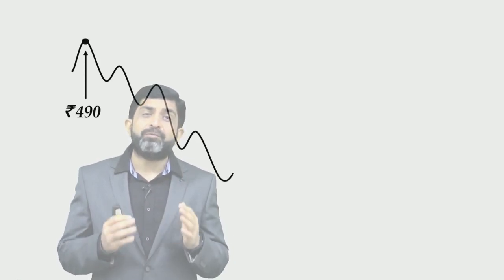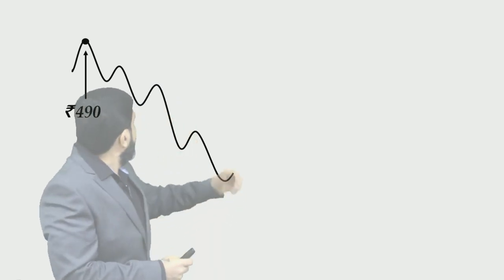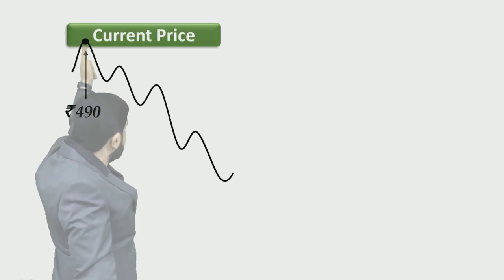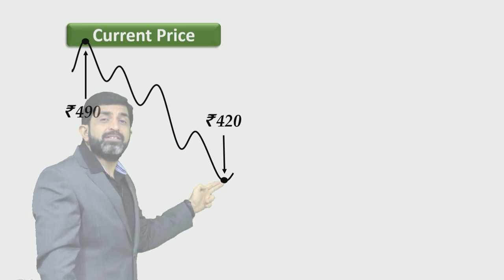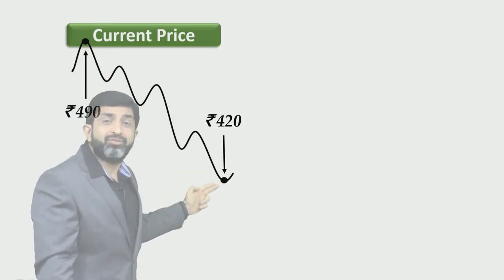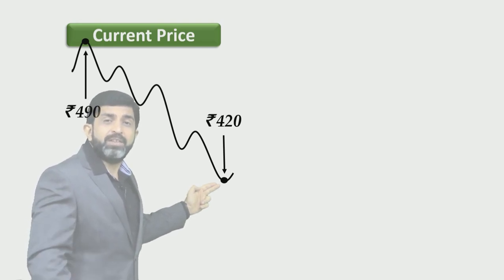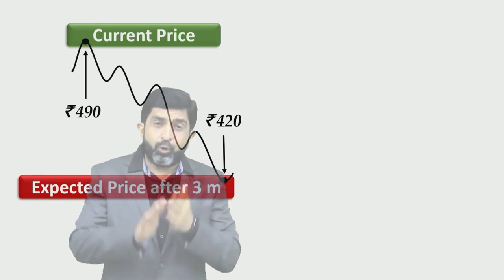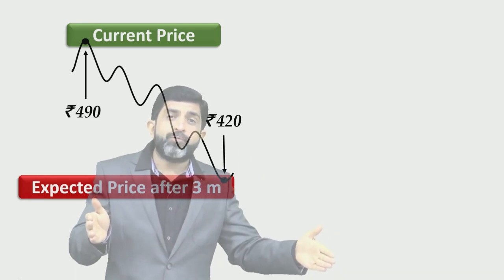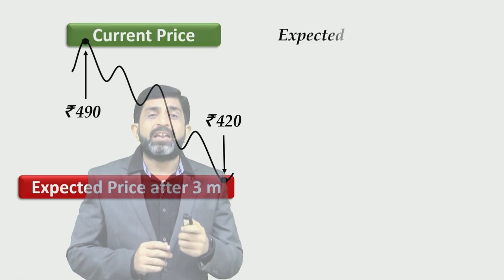Consider that the investor who has invested in the stock market is expecting a decline — meaning the investor has bearish sentiments about the stock. The current price of the stock is rupees 490 right now, and you are expecting a decline. The price might fall to rupees 420 after three months, resulting in an expected loss of rupees 70.